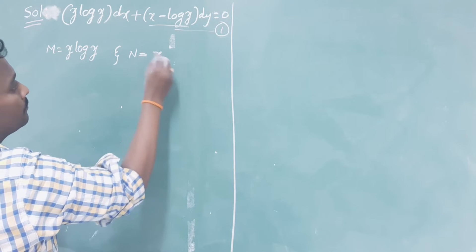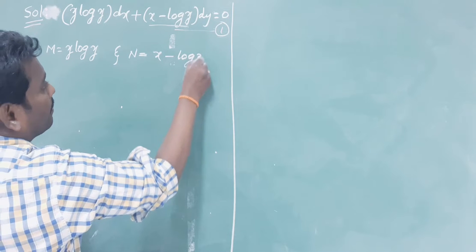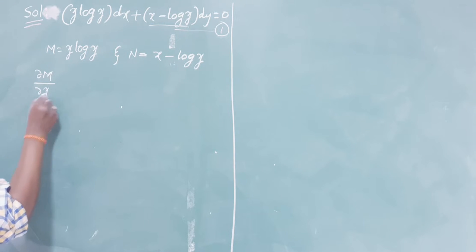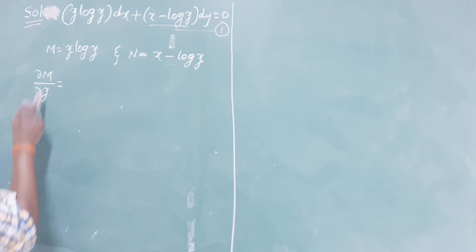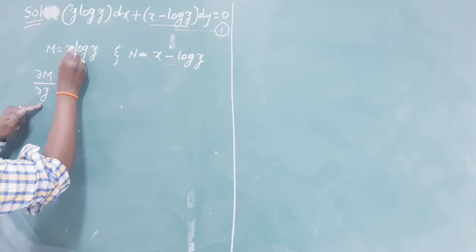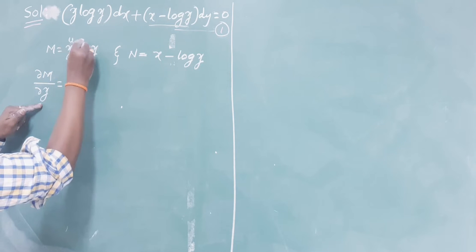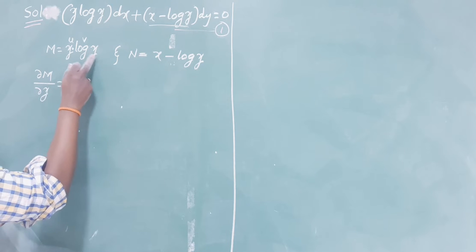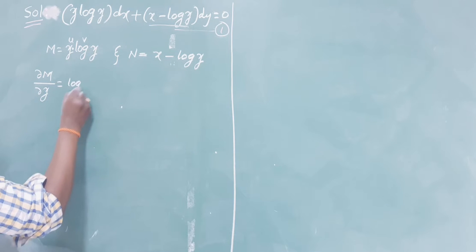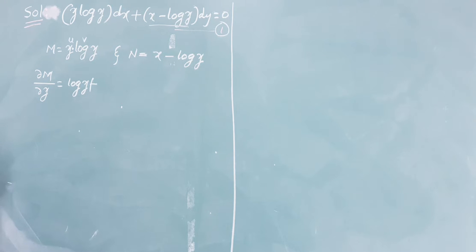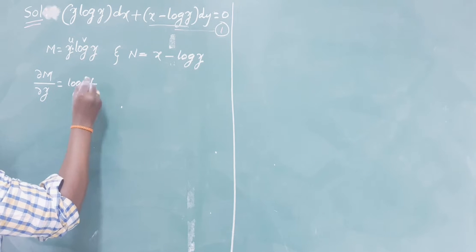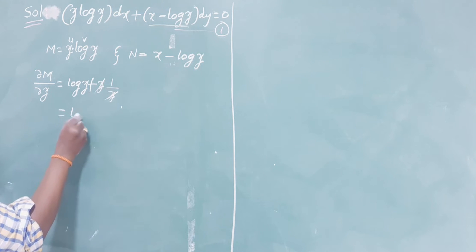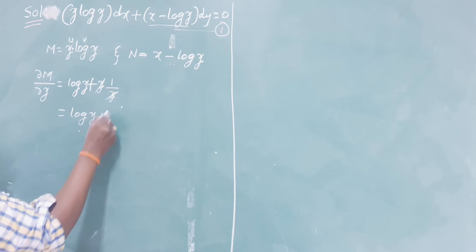Calculate ∂M/∂y: the partial differentiation of M with respect to y only. Here we have y·log(y), so apply the product rule. The derivative of y with respect to y is 1, giving 1·log(y), plus y times the derivative of log(y) which is 1/y, so y cancels. The result is log(y) + 1.